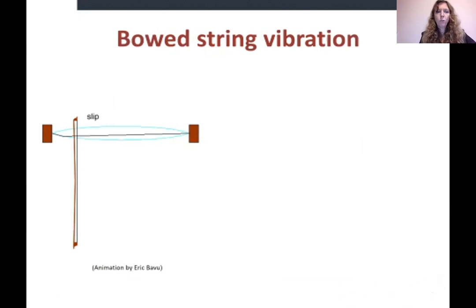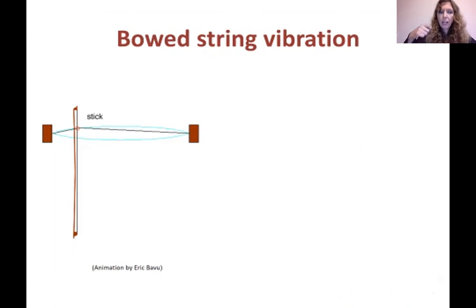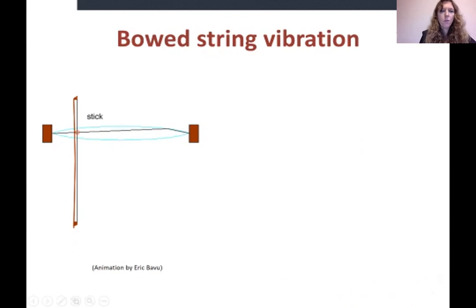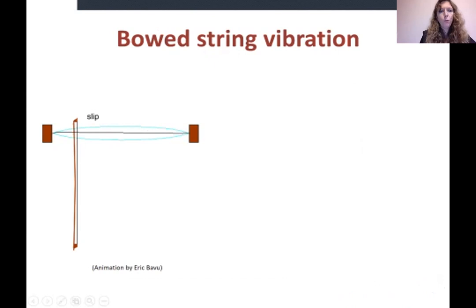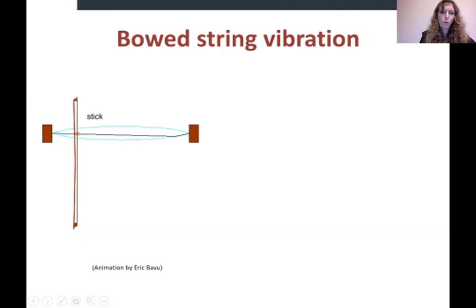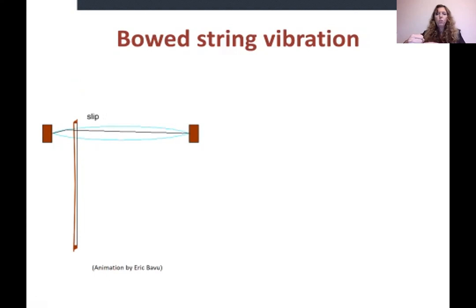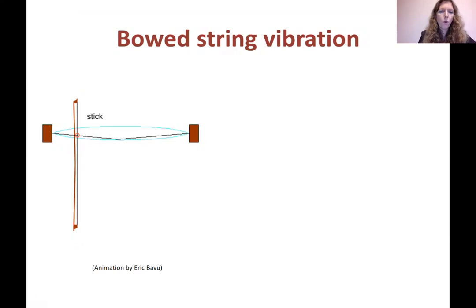So what happens when the string is bowed? Instead of a shaker exciting the string, here it's the bow moving. The bow will drag the string at some point, provoking a kink that travels between the two fixed ends. At some point in the cycle the string is sticking to the bow and moving along with it, and at another point the string is slipping. The string is grabbed by the bow, but at some point — like a rubber band pulled too far — it springs back and slides under the bow. This is called stick-slip motion.